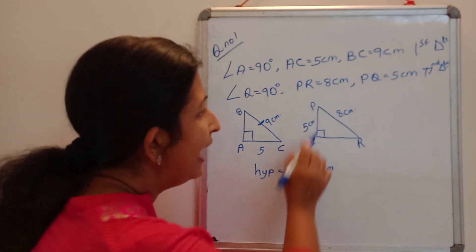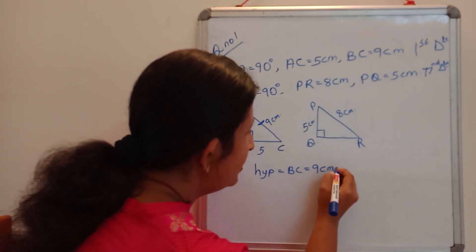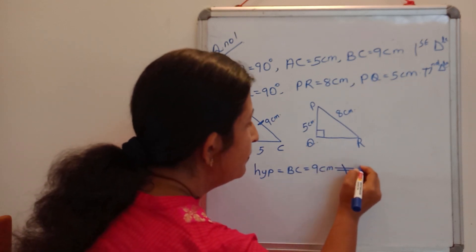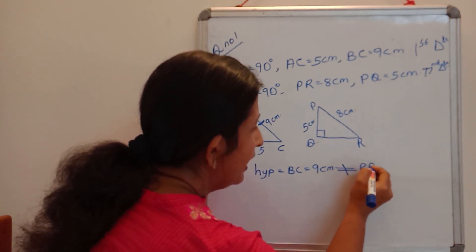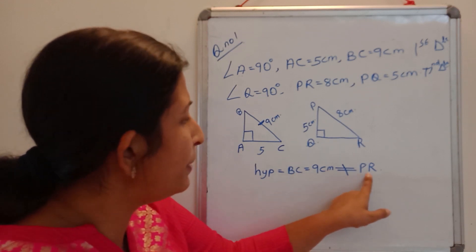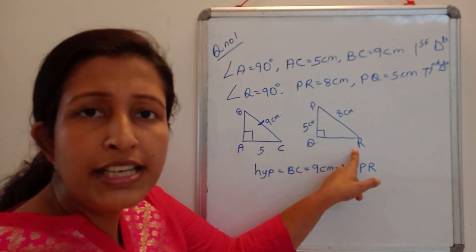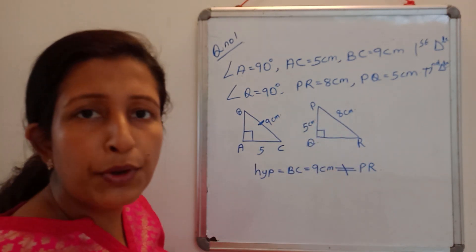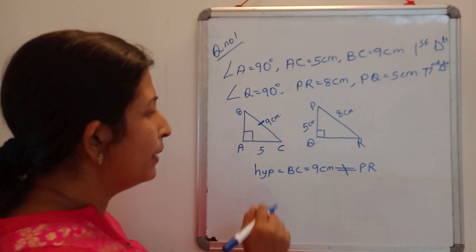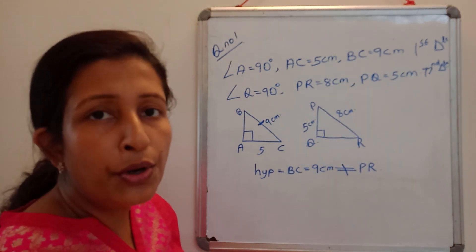And here PR is line opposite to right angle, so PR is the hypotenuse and PR is 8 centimeter. So I can write down is not equal to PR. That is BC is not equal to PR because BC is 9 centimeter and PR is 8 centimeter. So hypotenuses are not equal, so definitely we can say that these two triangles are not congruent.